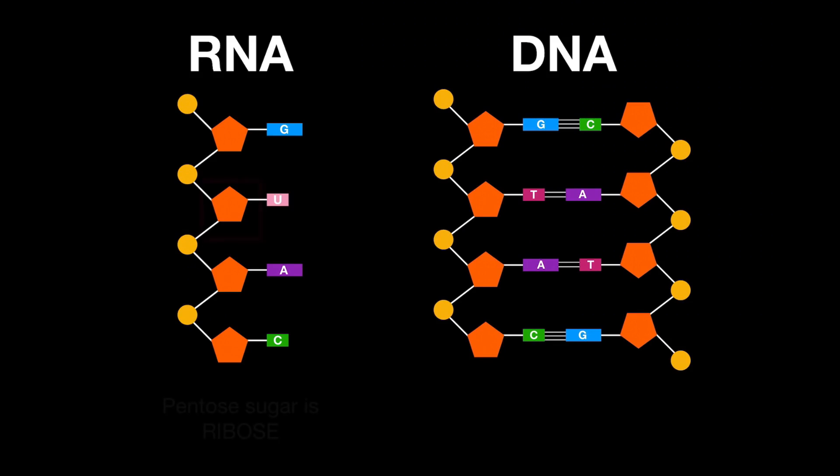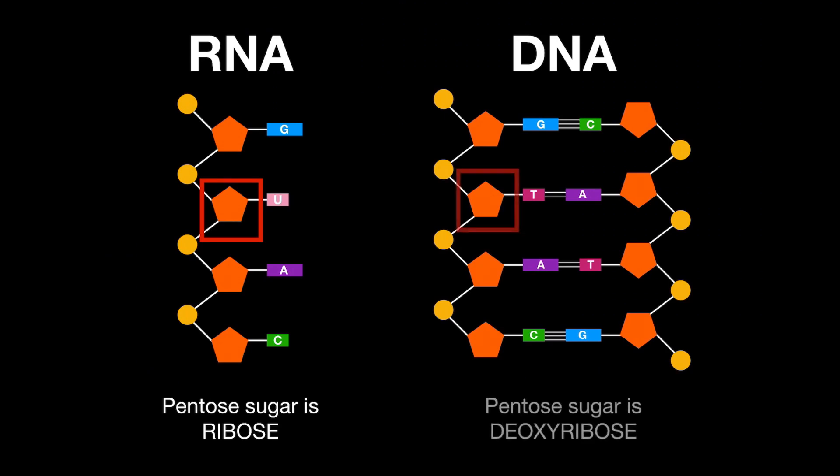Thirdly, within the nucleotide monomers, you find that the pentose sugar in RNA is ribose, whereas the pentose sugar in DNA is deoxyribose.